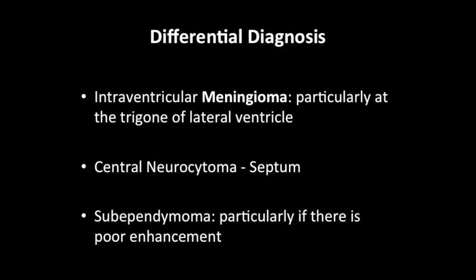The differential diagnosis for an intraventricular lesion within the lateral ventricles includes intraventricular meningioma, which is usually present at the trigone of the lateral ventricle. A neurocytoma usually abuts the septum pellucidum. A subependymoma can be present within the ventricles but shows poor post-contrast enhancement.